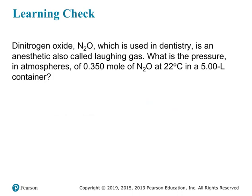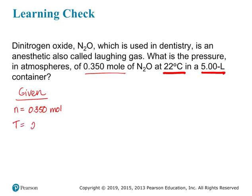Let's apply everything to a practice problem. Dinitrogen oxide, N2O, used in dentistry as an anesthetic — also called laughing gas — what is the pressure in atmospheres of 0.35 moles of N2O at 22 degrees Celsius in a 5-liter container? So we're given amount in moles, and temperature in degrees Celsius. For gases, we always want to use kelvin, so we add 273 to get 295 kelvin. We're also given volume: 5 liters.